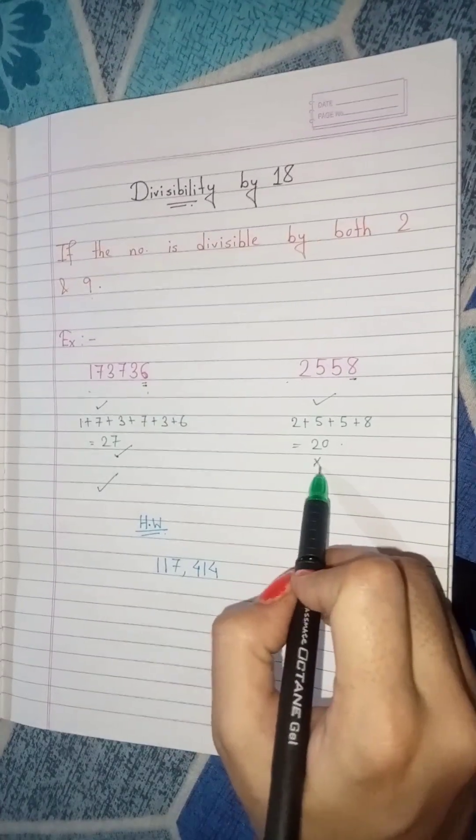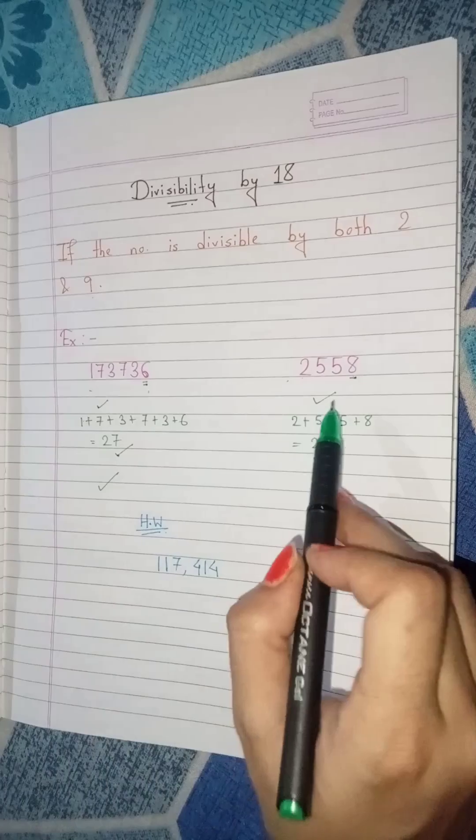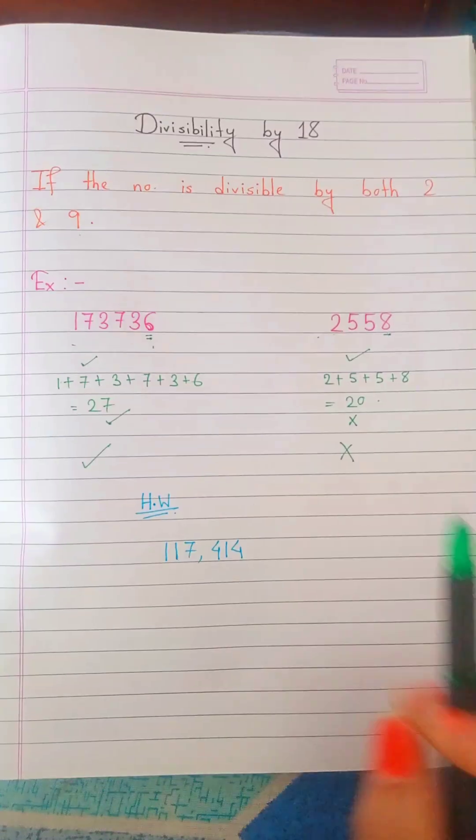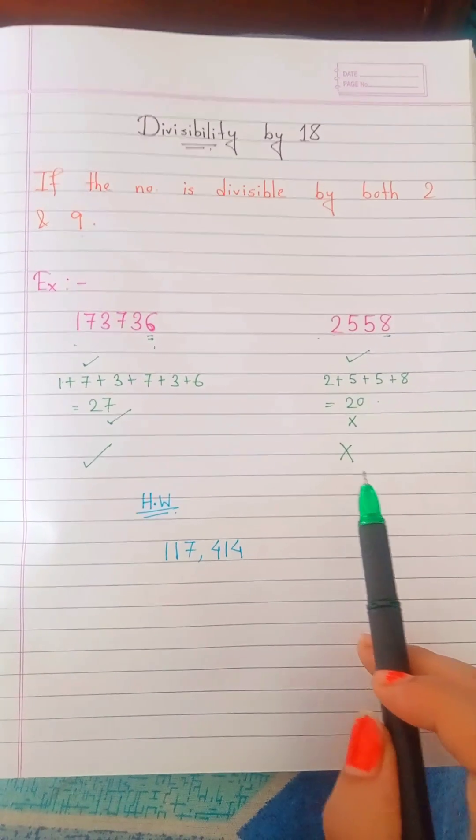This is not divisible by 9. If either of the conditions fails, the number is not divisible by 18.